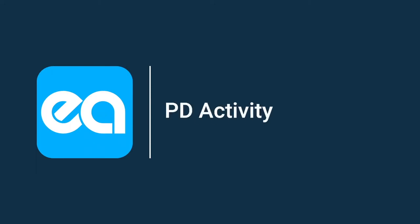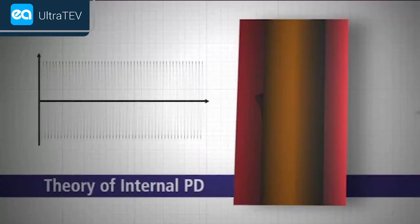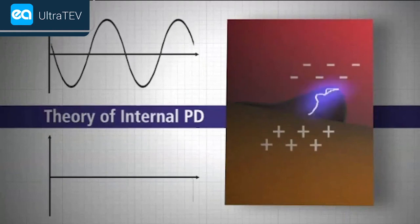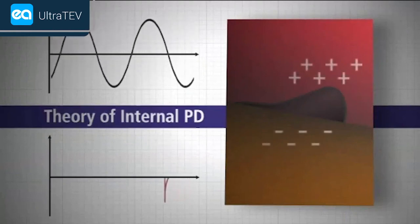PD activity can occur at any point in the insulation system where the electric field strength exceeds the breakdown strength of that portion of the insulating material.